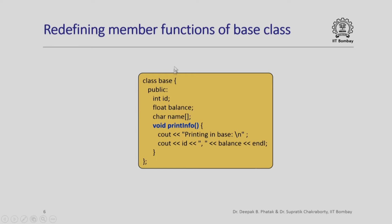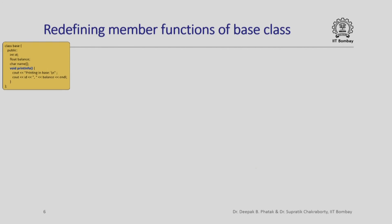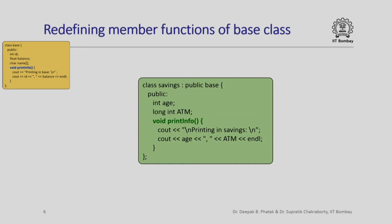Here is how the base class might look. The member function print info just prints the statement 'printing in base' and then it also prints the ID and balance, which are data members of the base class. Now let us look at the savings class which is derived from the base class. Here the member function print info prints 'printing in savings' and it outputs the value of the age and ATM data members, which are additional data members of the savings class.